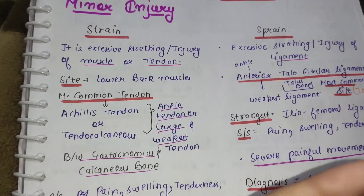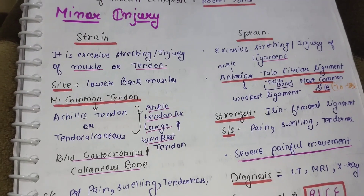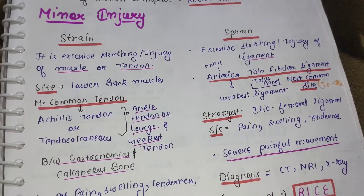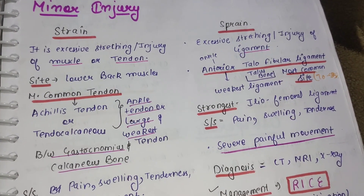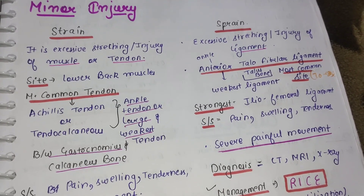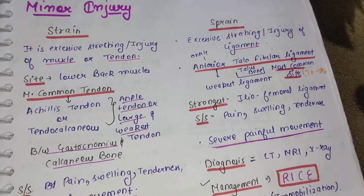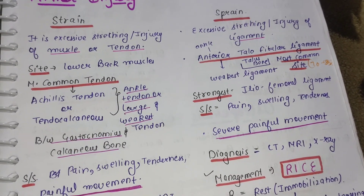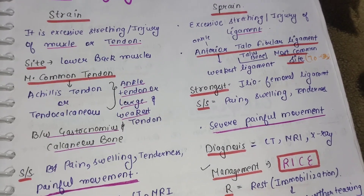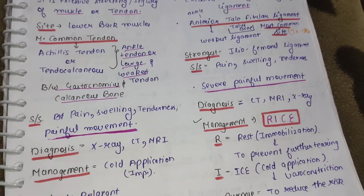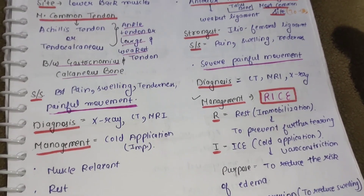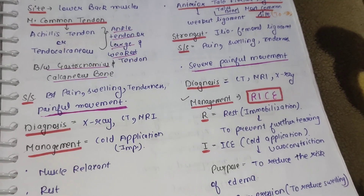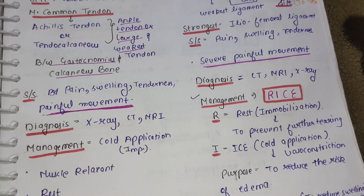एक बार दोबारा — जो strain होता है उसमें excessive stretching होती है, injury होती है muscles और tendons की. Main site lower back muscles होती है. Most common tendon Achilles tendon या tendocalcaneus होता है — gastrocnemius and calcaneus bone के बीच present, ankle tendon, large and weakest. इसमें pain, swelling, tenderness, painful movement देखे जा सकते हैं. X-ray, CT, and MRI diagnose करने के लिए उपयोग होते हैं. Management में proper rest, muscle relaxant, and cold application important हैं.